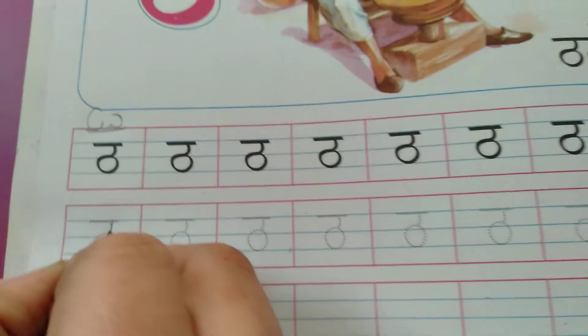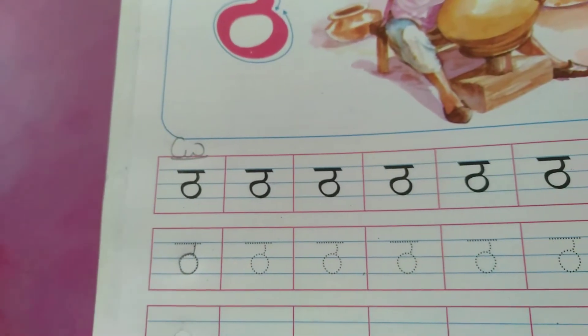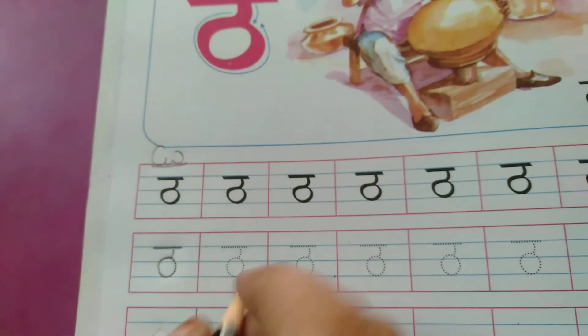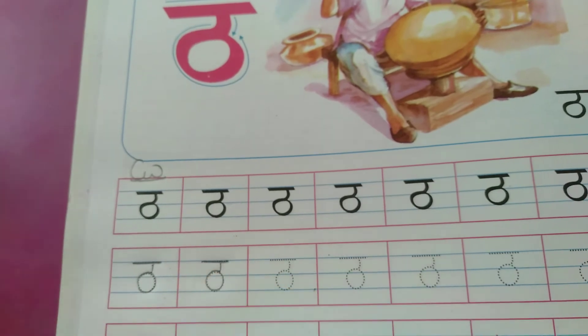Tha se Thatera. Standing line and neeche aapko standing line ke baad kya banana hai? Circle. Then slipping line. Standing line, circle, slipping line.